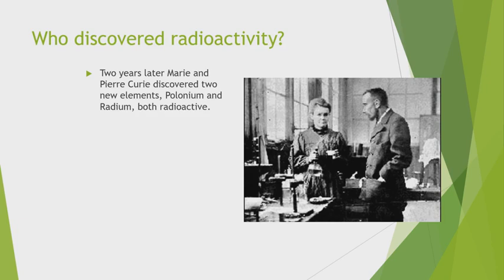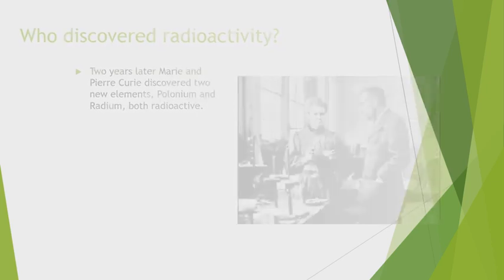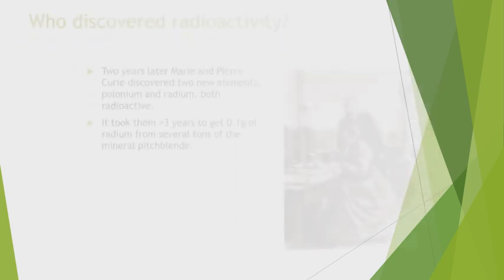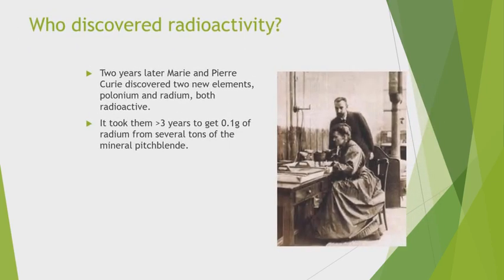Two years later, Marie and Pierre Curie discovered two new radioactive elements: polonium and radium. Both are radioactive. It took them three years to obtain just 0.1 gram of radium from several tons of mineral.